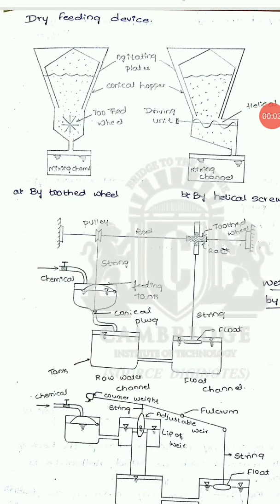In this session I am going to discuss about the constituents of a coagulation sedimentation tank. The coagulation sedimentation plant is called a coagulation plant or clarifier-flocculator. It contains four units: one is the feeding device, second is the mixing basin, third is the flocculation tank or flocculator, and fourth is the settling or sedimentation tank.